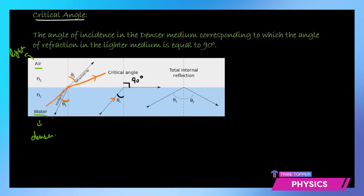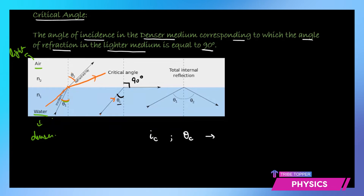At this point, whatever is your angle of incidence is called the critical angle. So how do we define the critical angle? It is the angle of incidence in the denser medium corresponding to which the angle of refraction in the lighter medium is equal to 90 degrees. The ray should be traveling from the denser to the rarer medium. That angle is known as the critical angle, denoted as Ic or theta C.